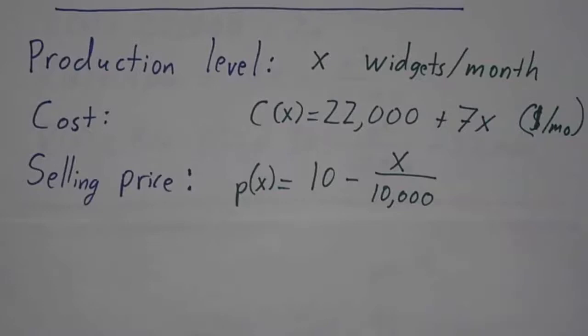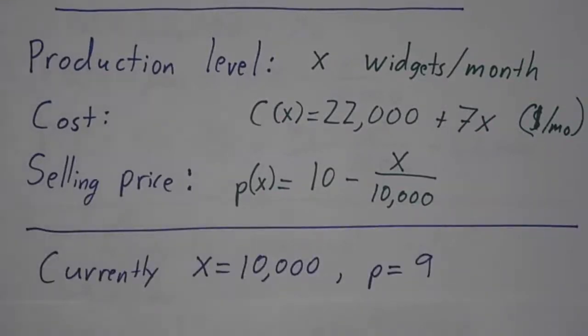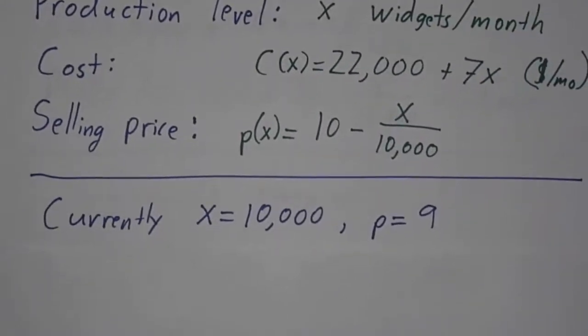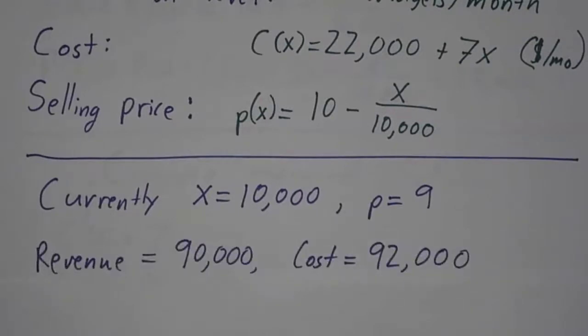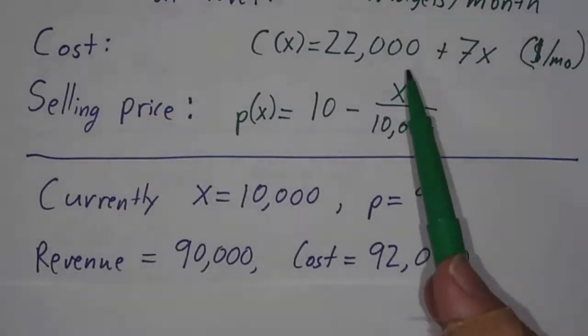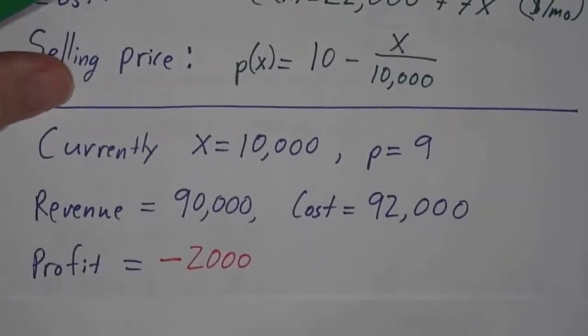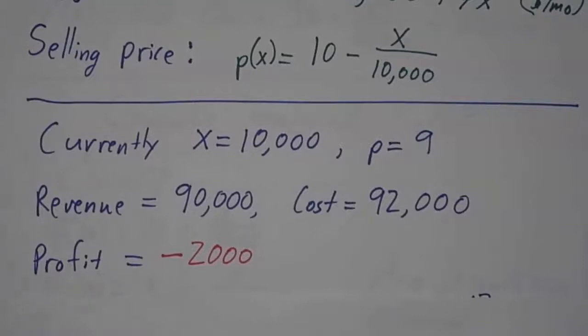The more it makes, the more it floods the market, the lower the price. So right now, they're making 10,000 widgets and selling them for $9. So that means that their revenue is $90,000, but their cost is $92,000. So they're losing money. Their profit is negative 2,000. They're 2,000 in the red.